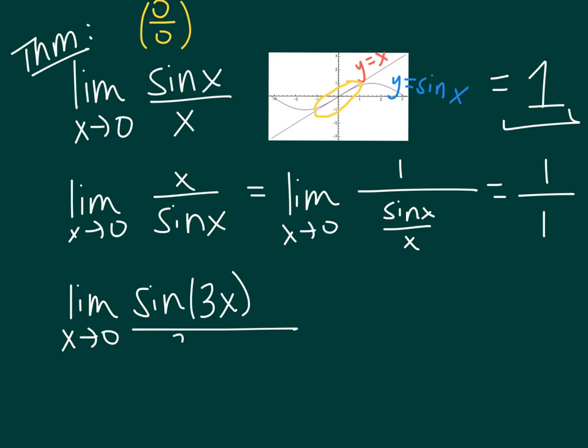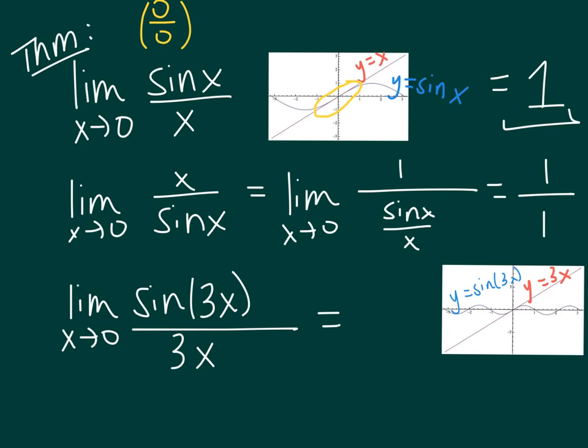And one more related limit that we'll be using is a version like this. Instead of having just x, you can have any multiple of x inside your sine and then that multiple in the denominator. And again, if you're thinking of the graph of this, again, my ratio of the numerator over the denominator as x is approaching 0 is going to remain 1. So this will be a variation that we'll use as well, and that will work any time what you have inside here matches here and where your x is going to 0.